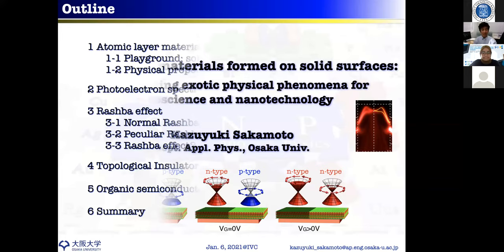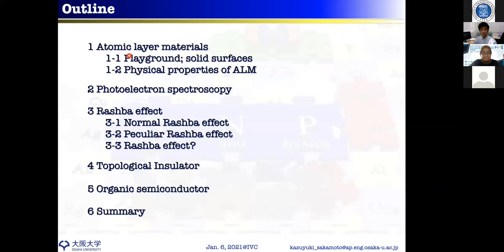I will first explain what atomic layer materials are and why we use solid surfaces to grow them, then discuss some exotic physical properties. After that, I'll introduce the method I use to investigate these properties — photoelectron spectroscopy — and show examples including the Rashba effect, topological insulators, and other semiconductors.